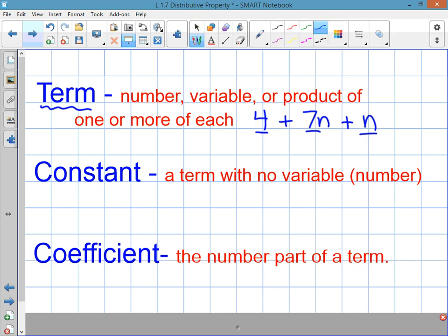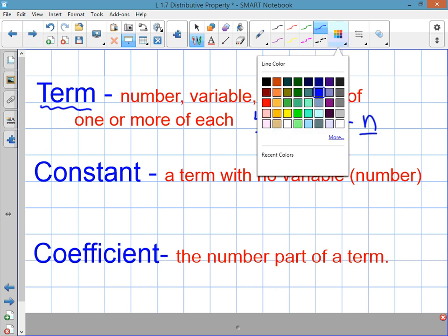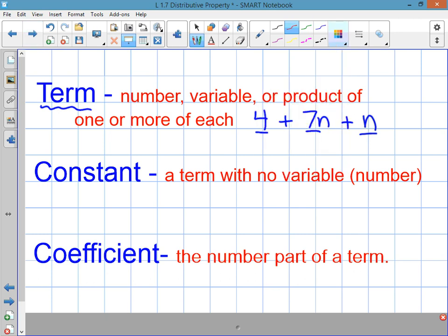The next word up here is constant, and it's just a term with no variable. Or, in other words, it's just a number. So, in this expression, four is a constant. It has no number next to it. Seven n and n is not a constant. It's got a variable in it.